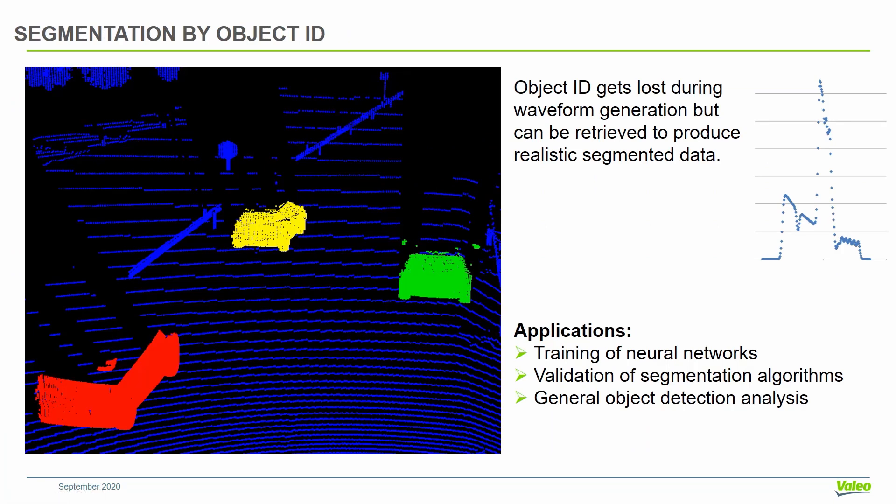In addition to this realistic signal, we can also get automatic segmentation by object ID. In theory, we lose this information because we construct this time-resolved waveform signal, where the object ID gets lost. It is no longer present in the signal. But using some tricks and knowing which points have contributed to the signals, we can still recover this information about the object ID, and then we can generate a lot of automatically segmented LiDAR data.